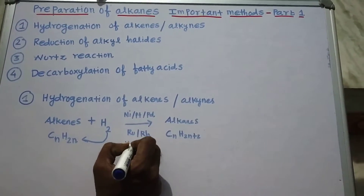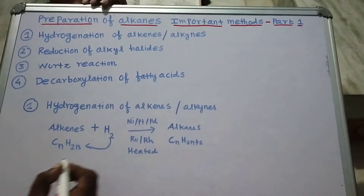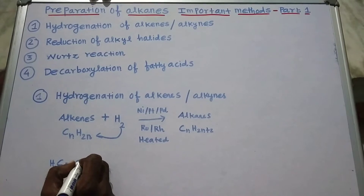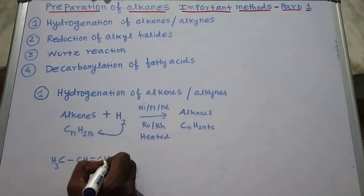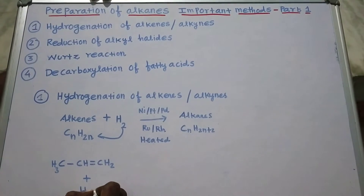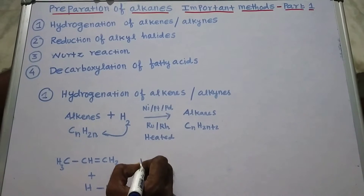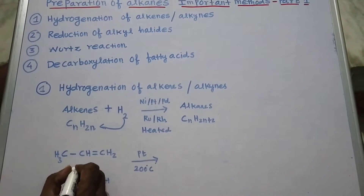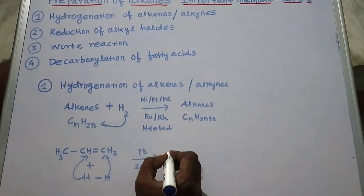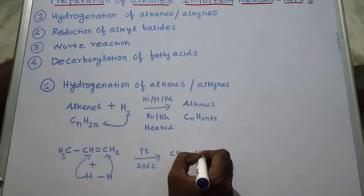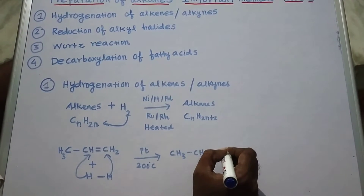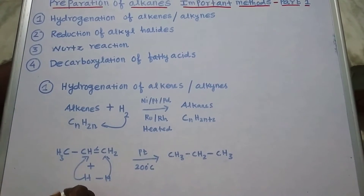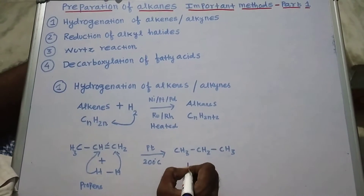For example, when CH3-CH2 is heated with a molecule of hydrogen in the presence of a carbon-carbon double bond, it produces CH3-CH2-CH3. One of the double bonds is broken and it is converted into a single bond, and the product here is called propane.